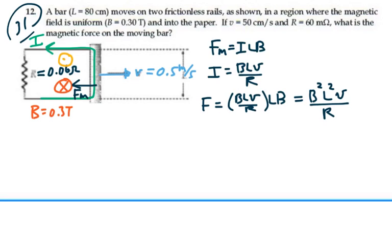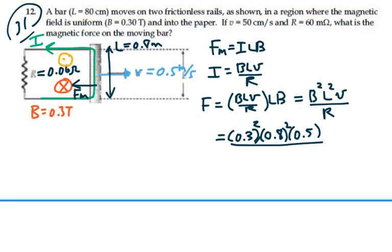We know all these things, so we can plug them in. The magnetic field is 0.3. We're going to square that. Our L is 80 centimeters. I didn't mark it on there. So here's our L right here. That's going to be 0.8 meters. So we're going to put that in there, 0.8 meters squared times our velocity, 0.5 meters per second, over the resistance, which is 0.06 ohms. And this is equal to 0.48 N.